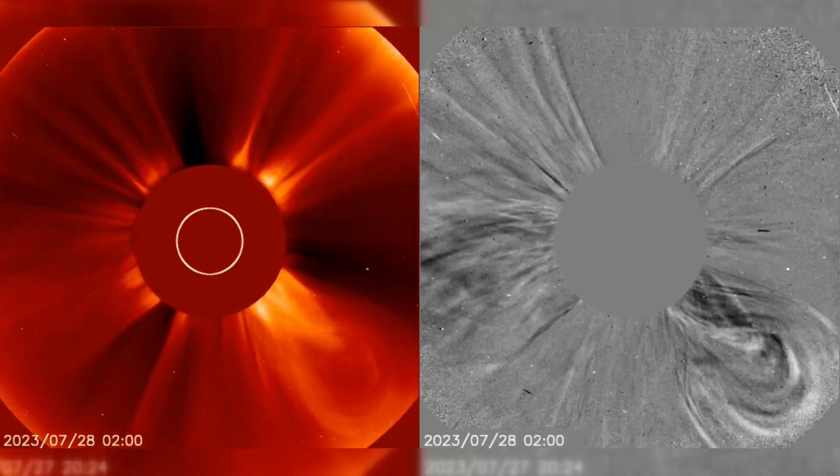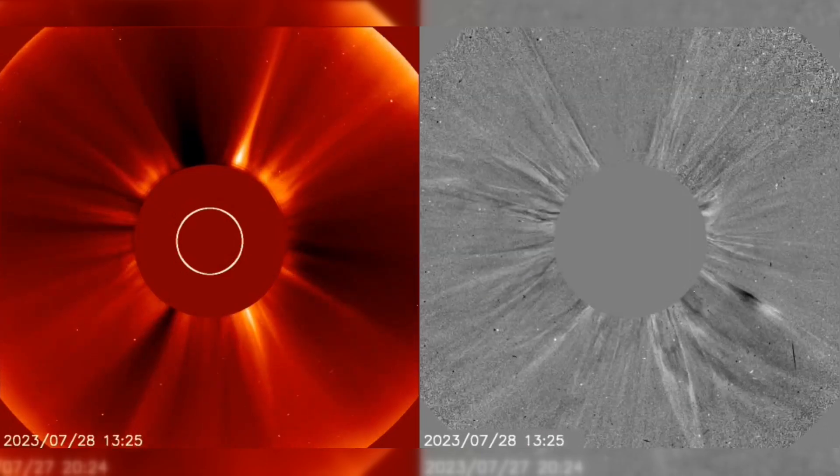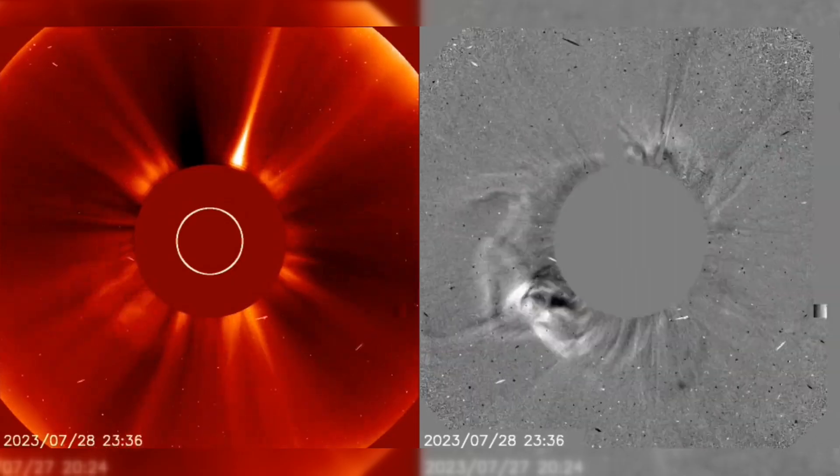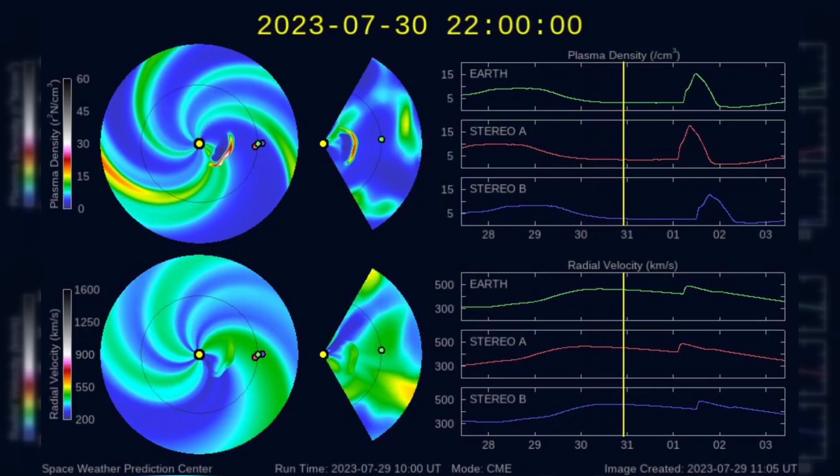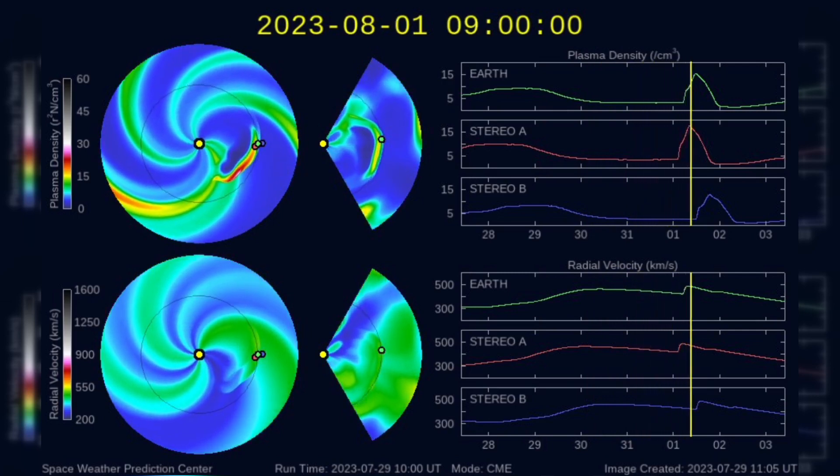Following the eruption, the Solar and Heliospheric Observatory observed a faint, lopsided halo CME emerging from the Sun's southern hemisphere. According to NOAA's predictive model, this Earth-directed CME is set to impact our planet on August 1.